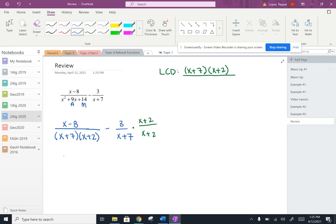All right, let's go ahead and start simplifying. So I can write this as x minus 8 all over x plus 7, x plus 2, minus 3 times x plus 2, all over the least common denominator.